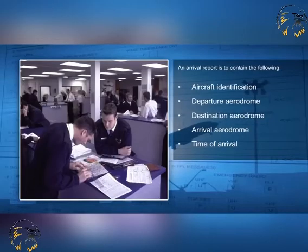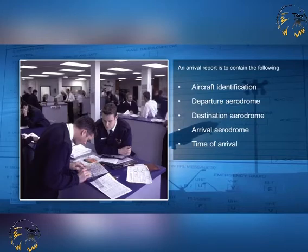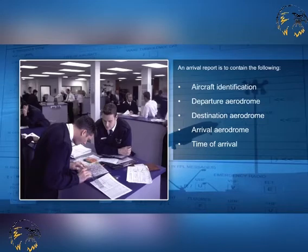An arrival report is to contain the following: aircraft identification, departure aerodrome, destination aerodrome, arrival aerodrome, and time of arrival. Destination aerodrome is only included, of course, if it is not the arrival aerodrome — in other words, if the aircraft has been diverted.